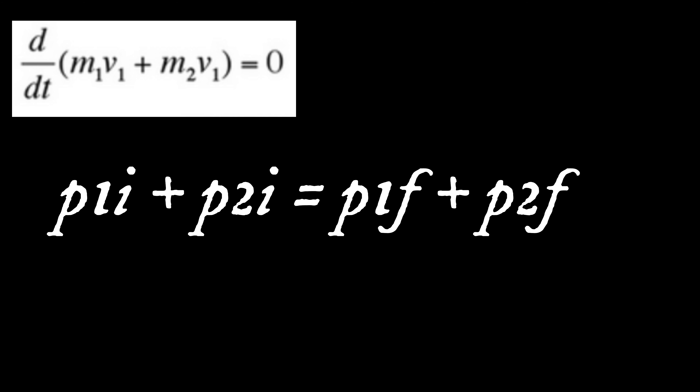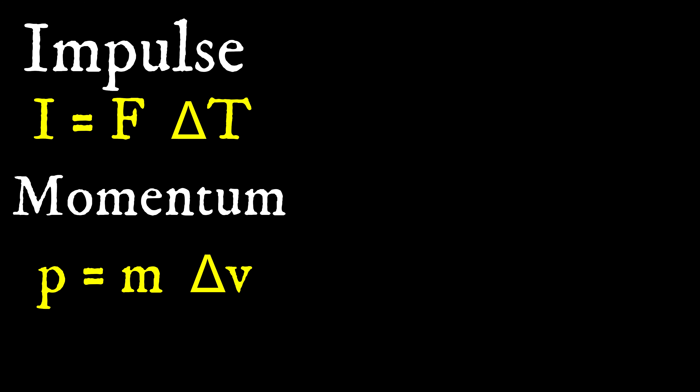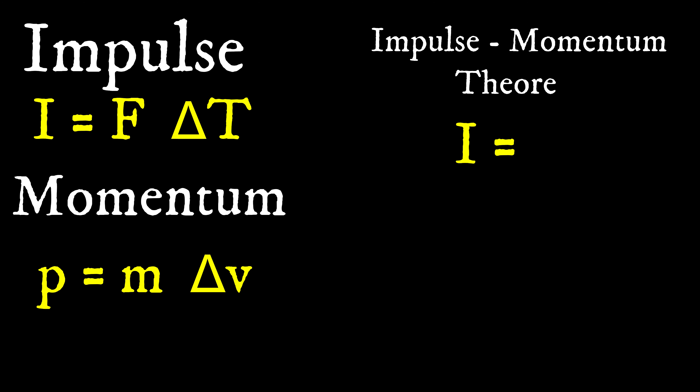What about a non-isolated system? We call a system non-isolated when a net force from the environment acts on it. Here we introduce a new vector called impulse. Impulse is equal to the change in momentum, and it can be considered the degree to which an external force changes the momentum of a particle over time. We write impulse equals force times the change in time.